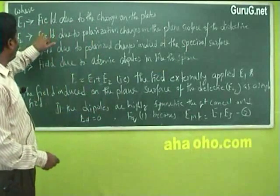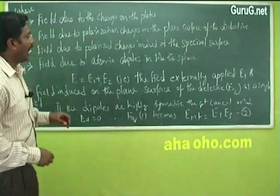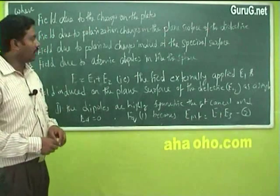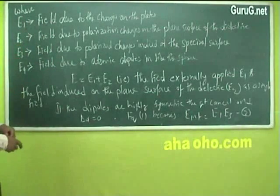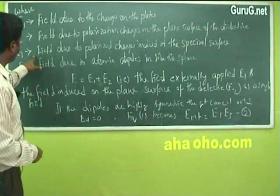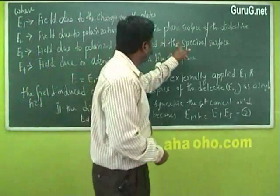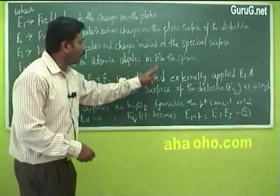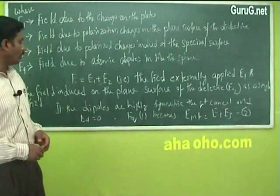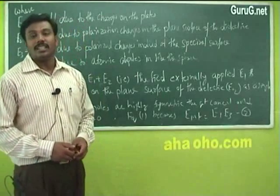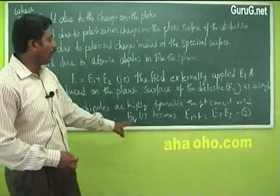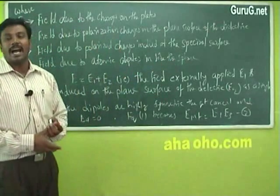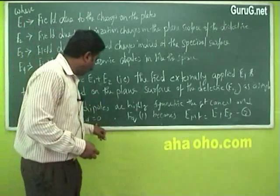E1 is the externally applied field and E2 is the field induced on the plane surface of the dielectric, so both E1 and E2 can be written together as E. For E4 — the field due to atomic dipoles inside the sphere — when the dipoles are highly symmetrical, the dipole moments cancel each other. Therefore E4 = 0, and equation 1 becomes: E_internal = E + E3.